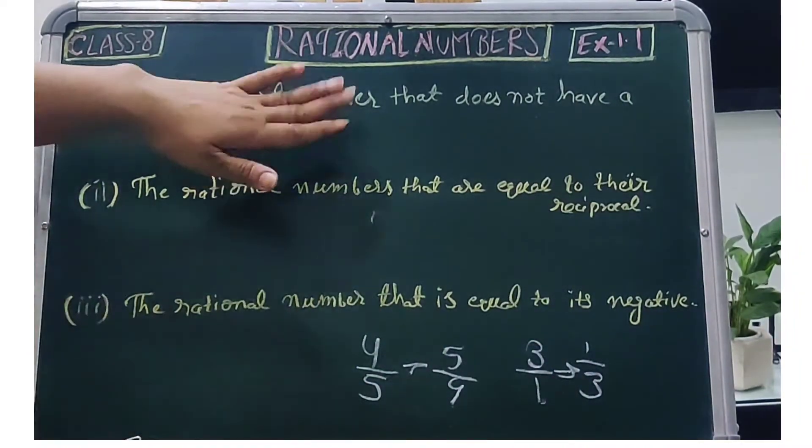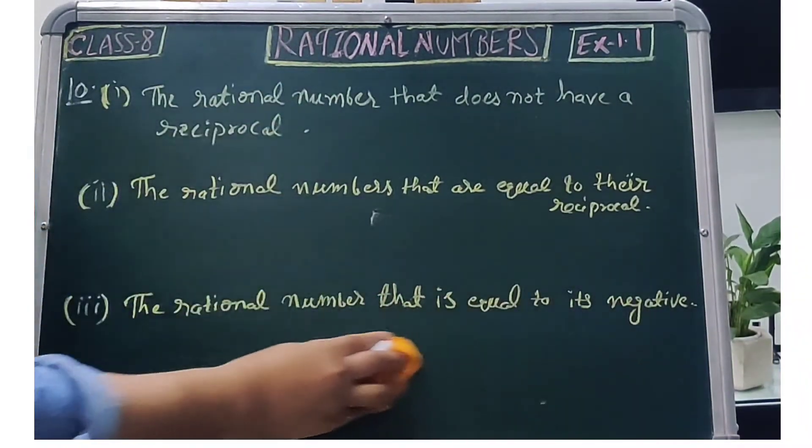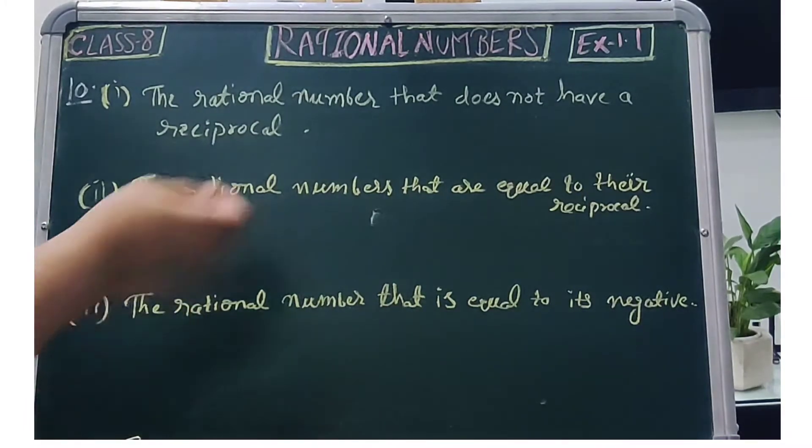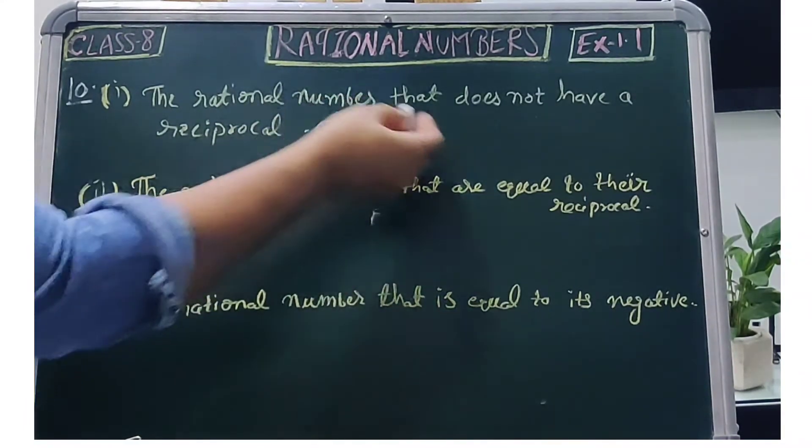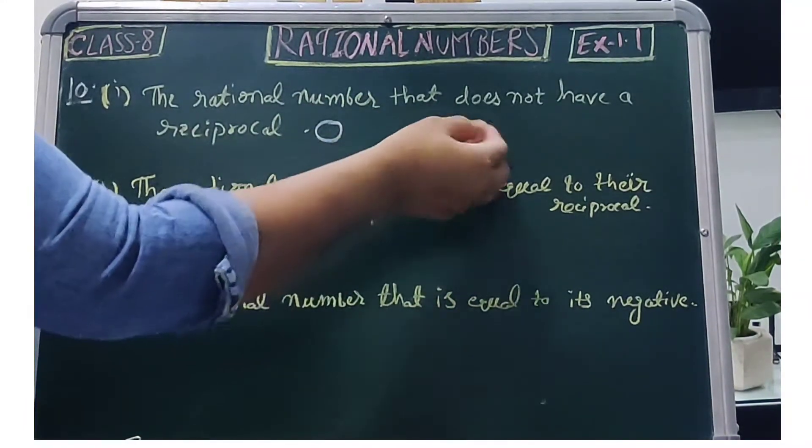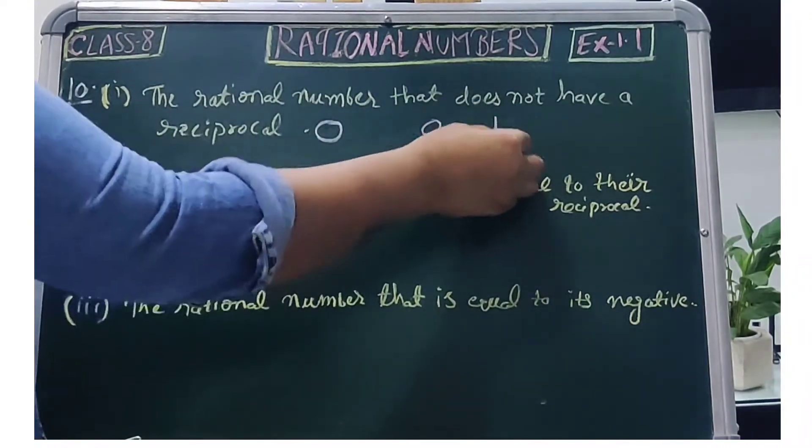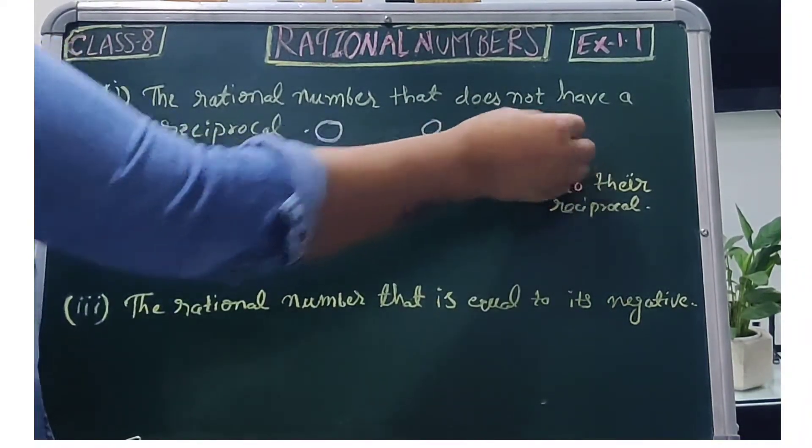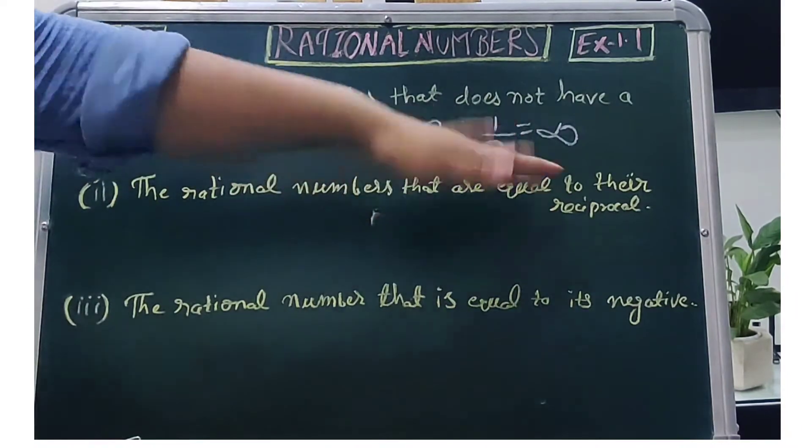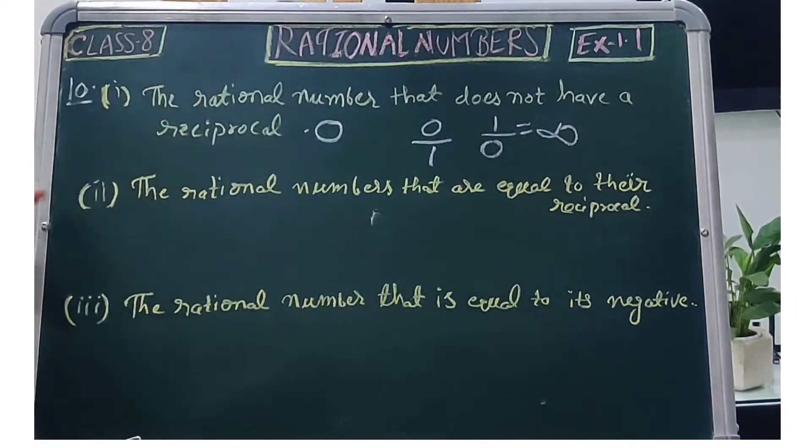So we have a rational number which does not have a reciprocal. So what is the number? 0. Because if we have 0 divided by 1, which is not defined. Okay, it is not defined. So 0 does not have a reciprocal.